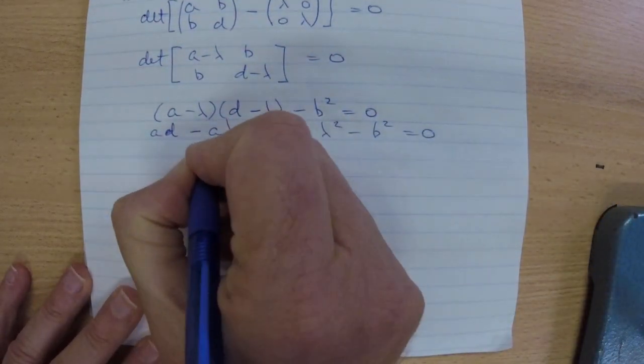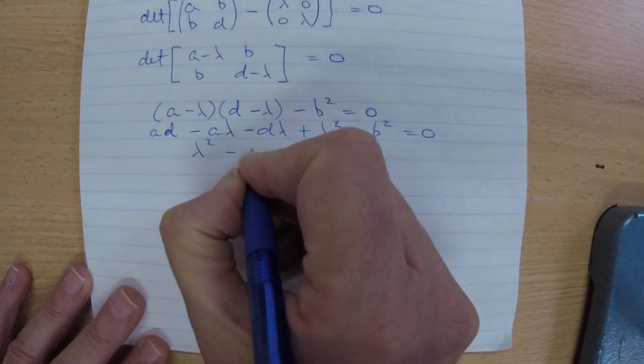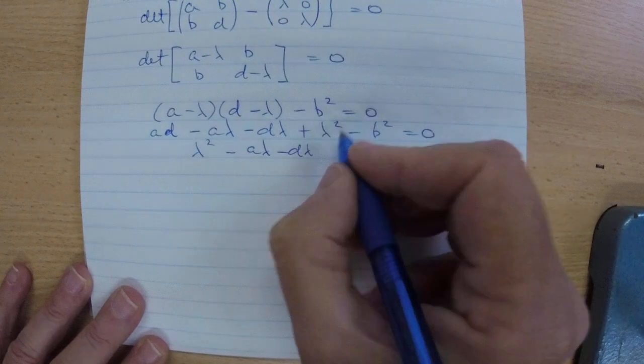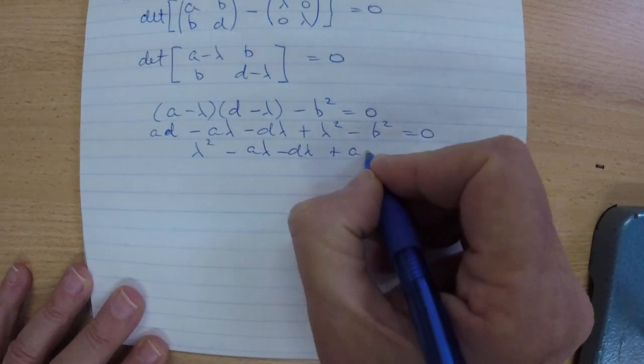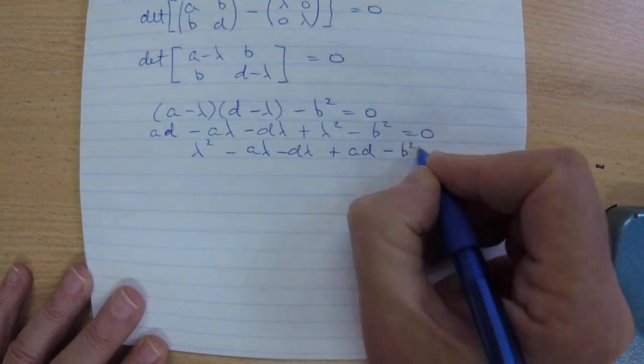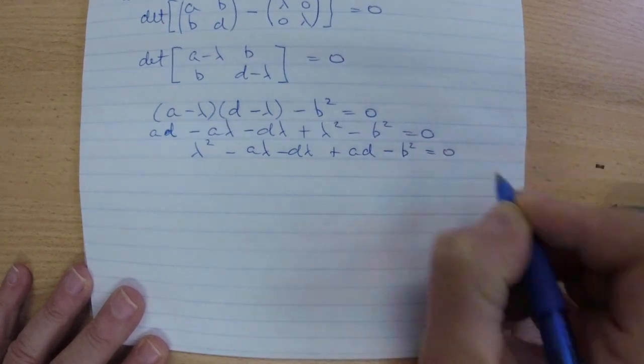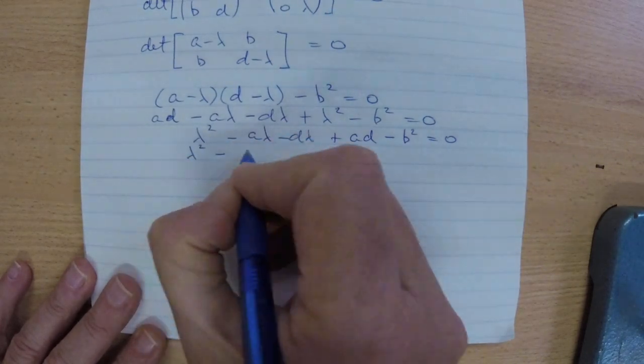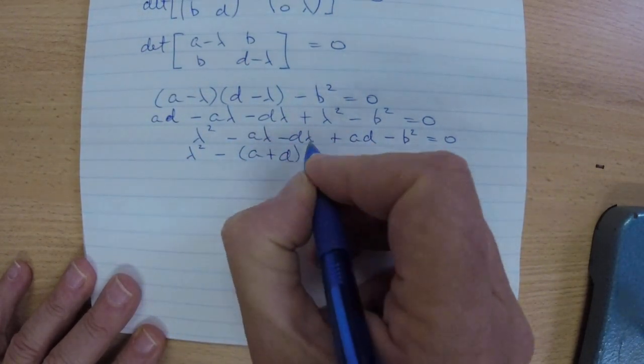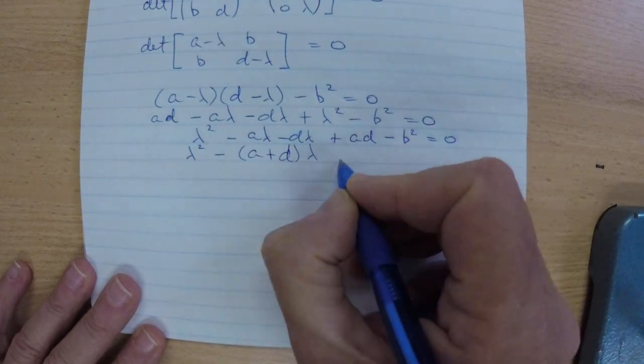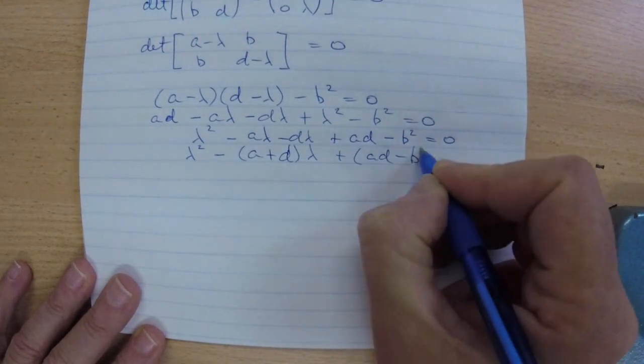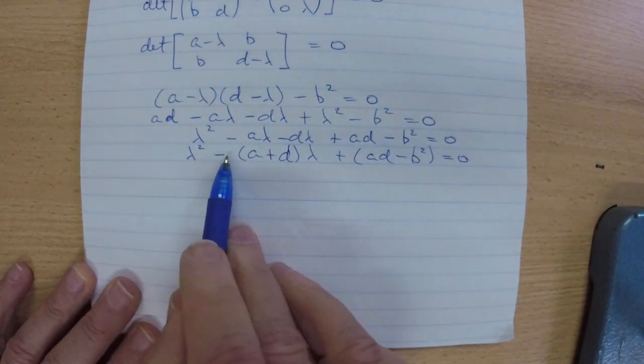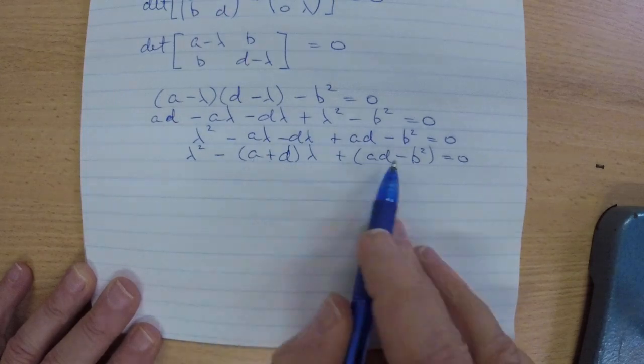So let's put lambda squared at the front. Now I have minus A lambda minus D lambda, then I have plus AD minus B squared. Probably better if I write this as minus (A plus D) lambda, and then I'll just put brackets around the AD minus B squared, so that it really does look like a quadratic where the B value is negative A plus D and the C value.